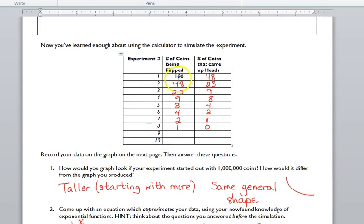That first time, we went from 100 to 48. That's a difference of 52. The second time, for my data, I went from 48 to 23. That was only a difference of 25.